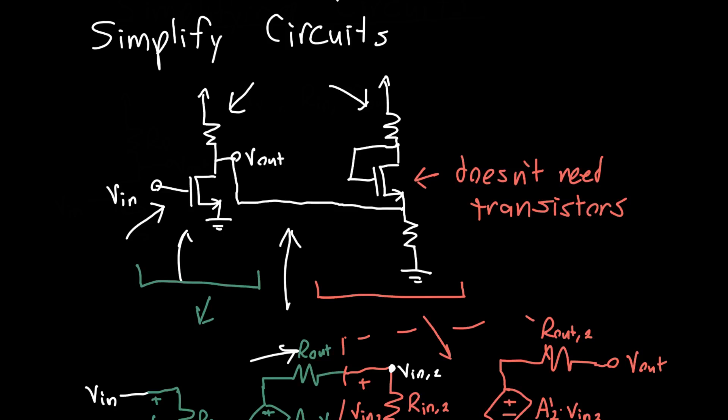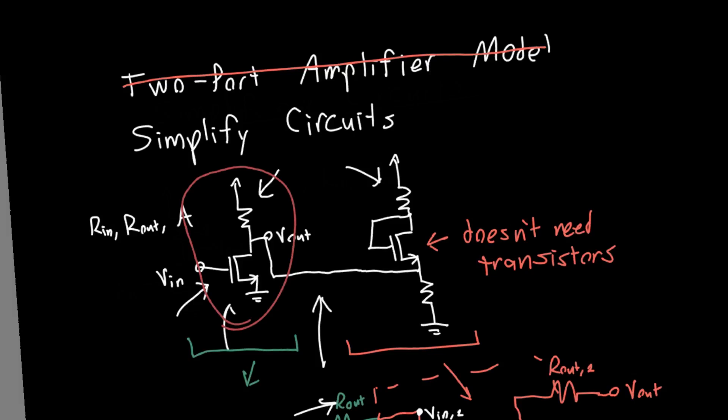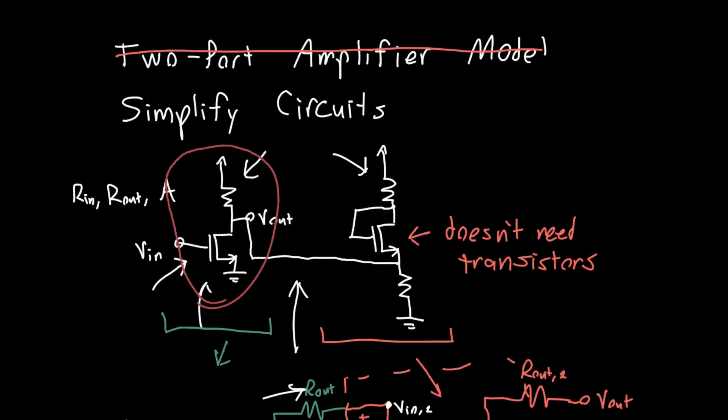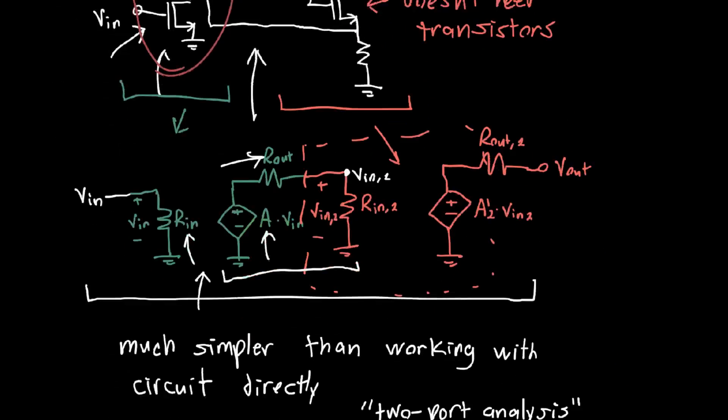So rather than having to deal with each circuit as sort of an individual beast, what we'll do is we'll actually decouple the problem. So if you calculate the input resistance, the output resistance, and the gain, for example, of this circuit, then you know how this circuit interacts.